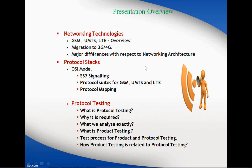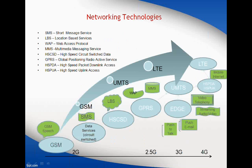Moving on to the first one, here you can see the networking technologies. Starting with 2G and 4G, the evolution happens in such a way that we will have a demand for increased data access and better quality. That is the main objective why everybody moves from 2G to 4G, and why it is required we will be checking in the further slide.